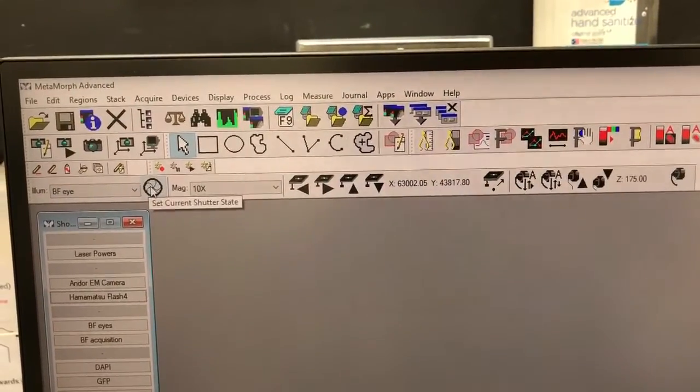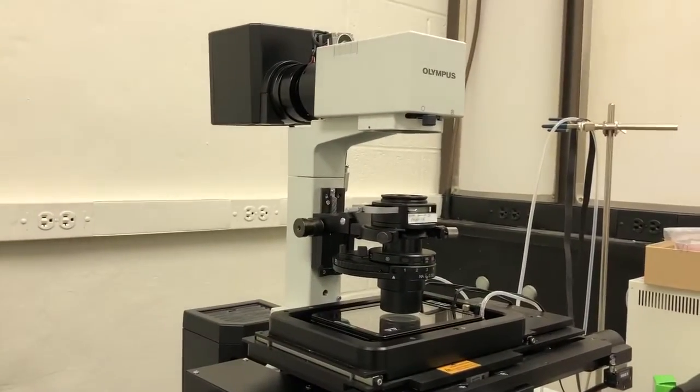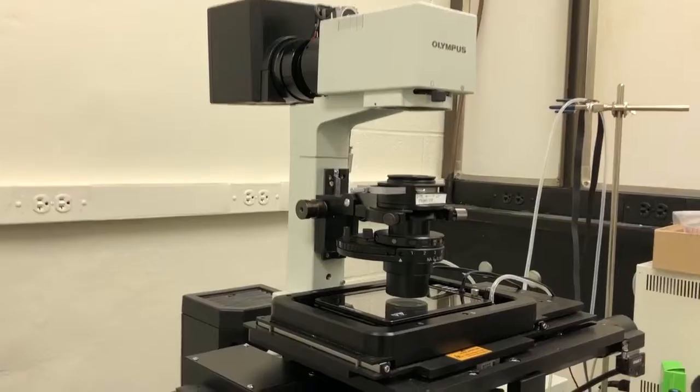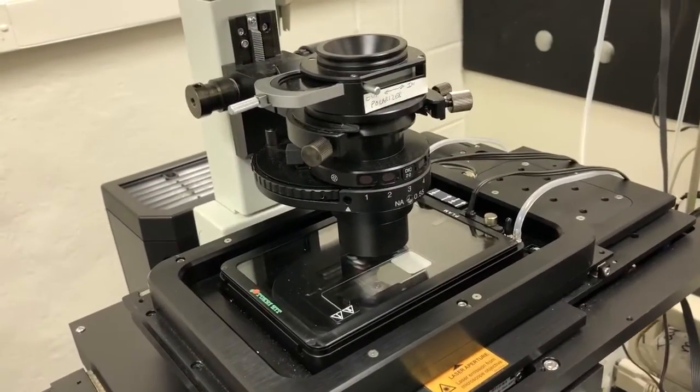And then to illuminate the sample, we're going to click on this button here. That turns on the light and opens a shutter that can illuminate the sample. So now we know that we have light going through the condenser into the sample.